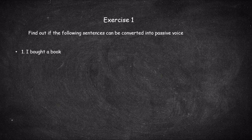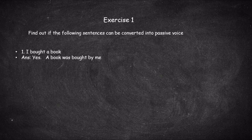The first sentence: 'I bought a book.' 'Bought' here is a transitive verb because we have the object 'a book.' When it is a transitive verb, you can convert it into passive. The passive form is 'A book was bought by me.' Next: 'He laughs.' There is no object — 'laughs' does not take an object, so it is an intransitive verb and cannot be converted into the passive form.